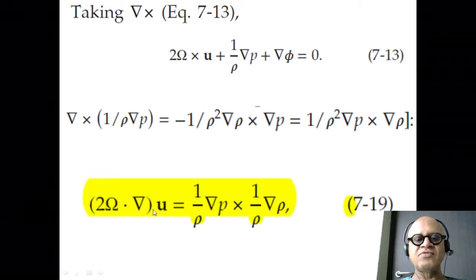And we had derived the thermal wind equation 2Ω·∇u = (1/ρ)∇p × (1/ρ)∇ρ, where we had flipped here to remove the negative sign and 1 over rho was moved around.